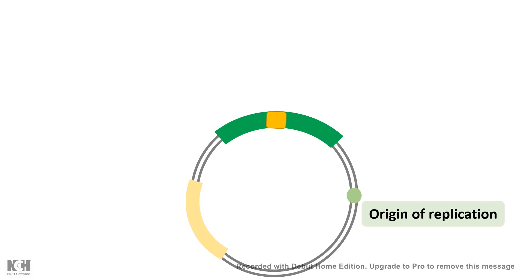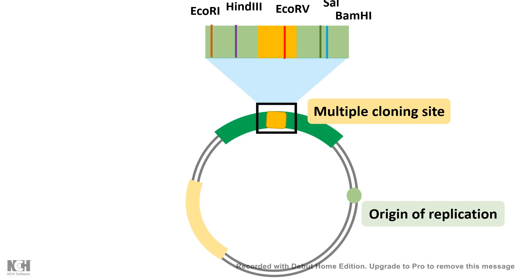To summarize: the plasmid has an origin of replication that allows it to replicate inside the bacteria independently. It also has a multiple cloning site with several restriction sites where we can cut and insert our gene of interest. It has a selectable marker that distinguishes bacteria which have taken up the plasmid from those that have not.